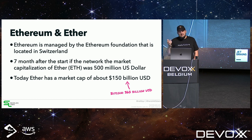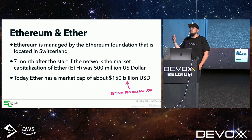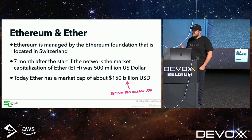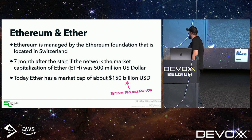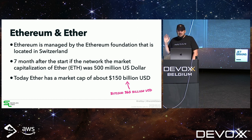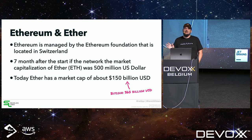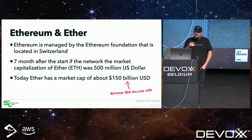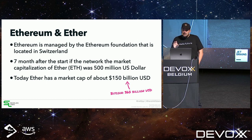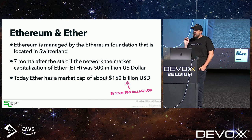Ethereum's cryptocurrency coin is called Ether. Today Ether has a market cap of about 150 billion US dollars — less than double that of Bitcoin, but still quite impressive.